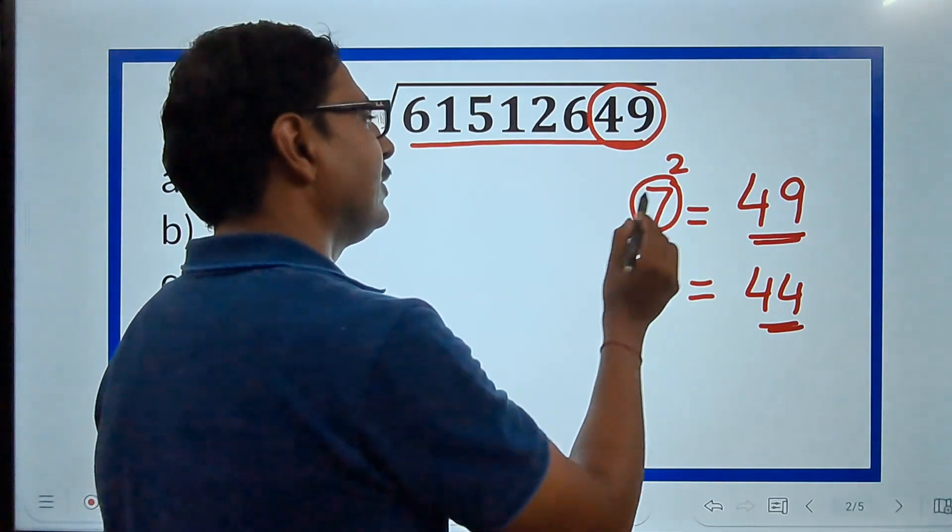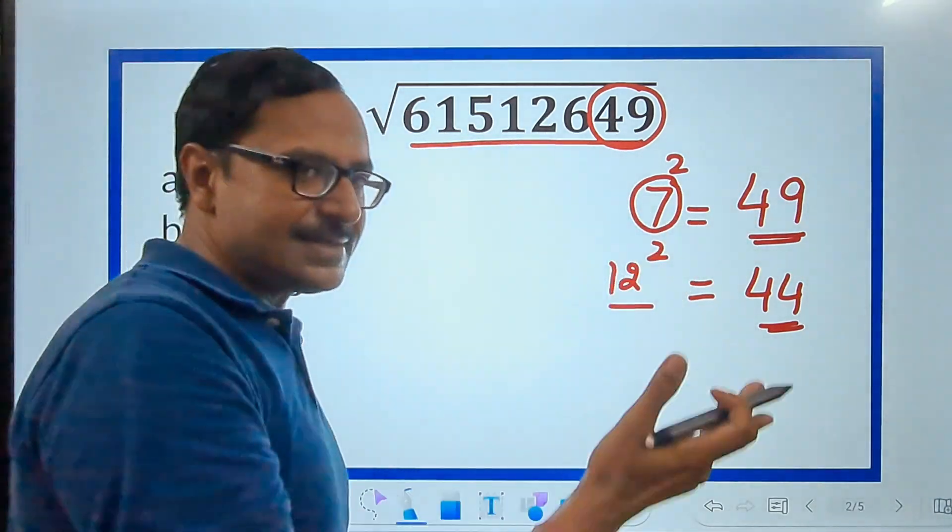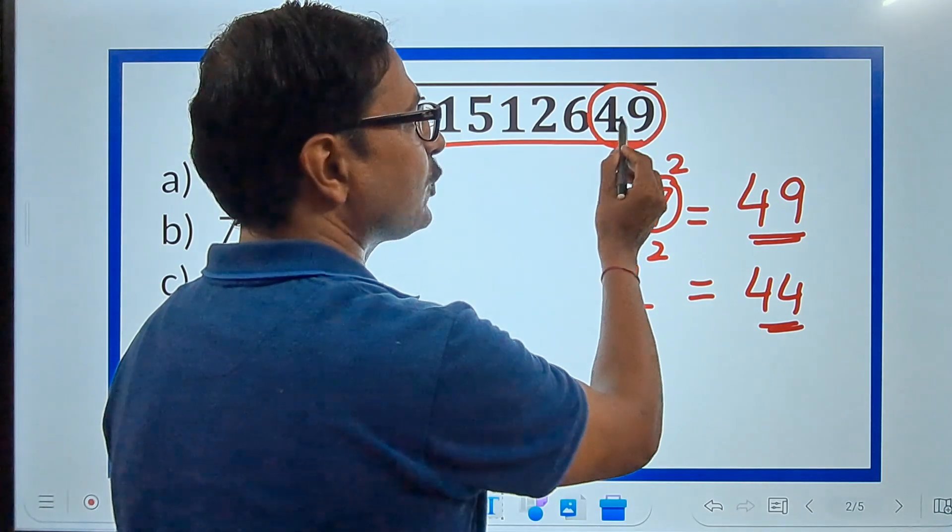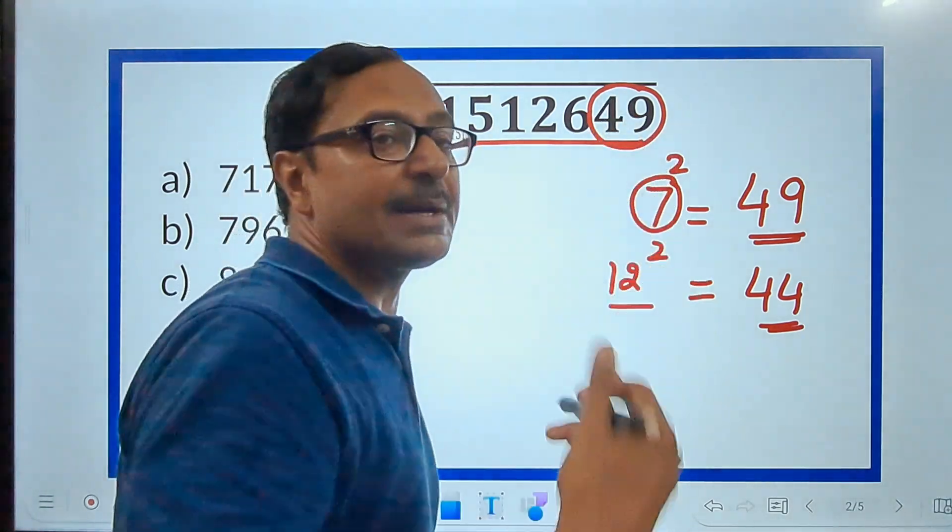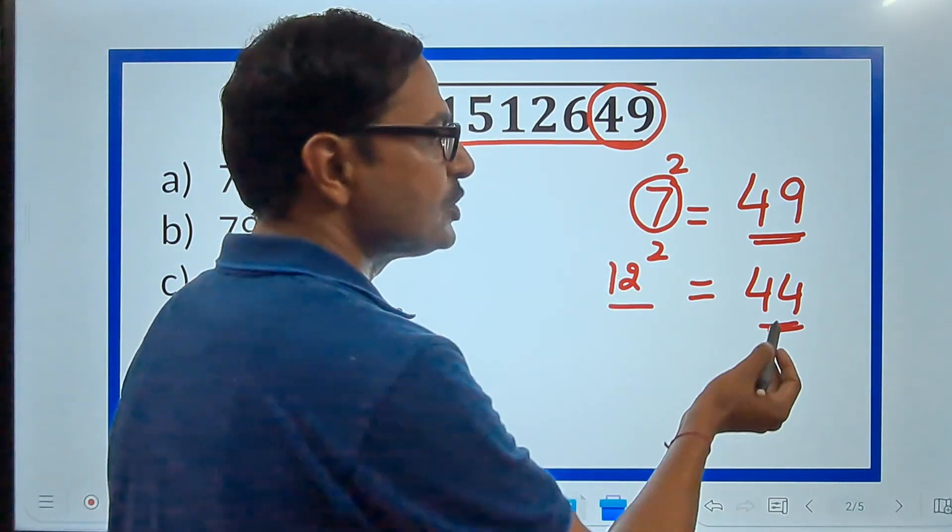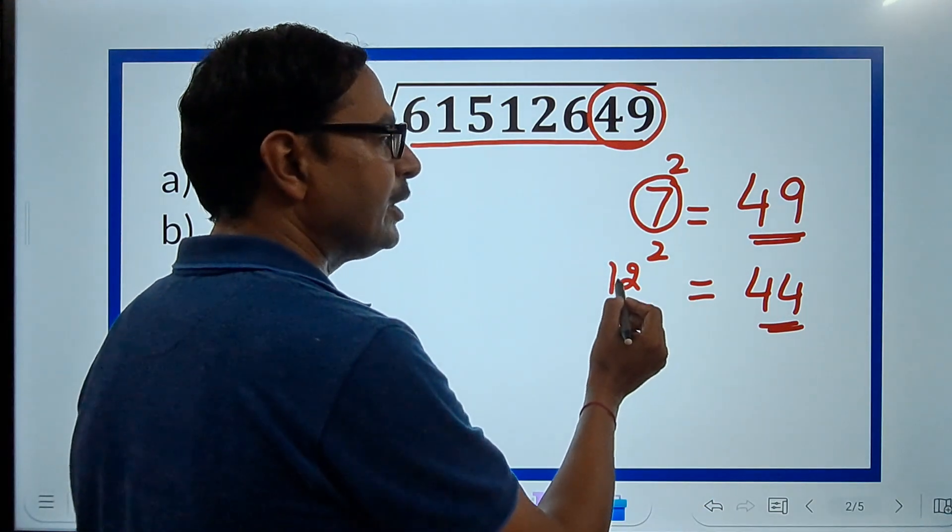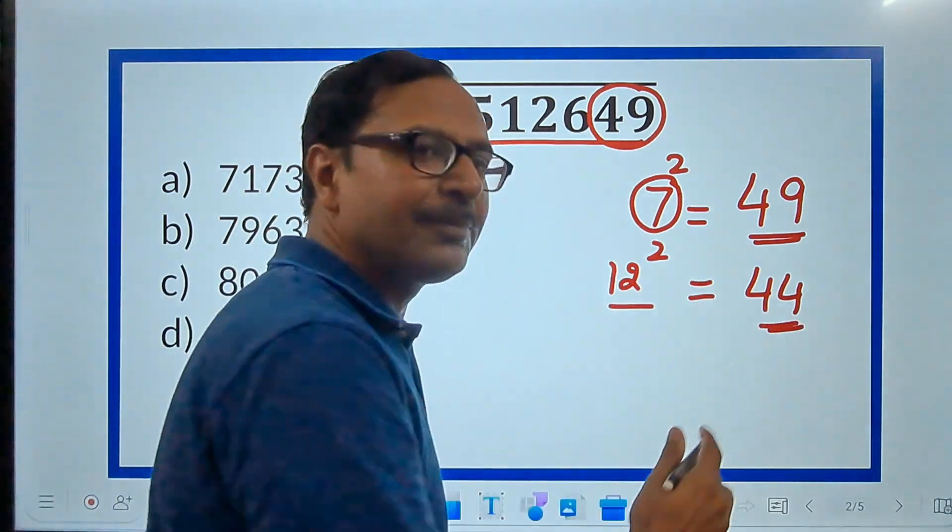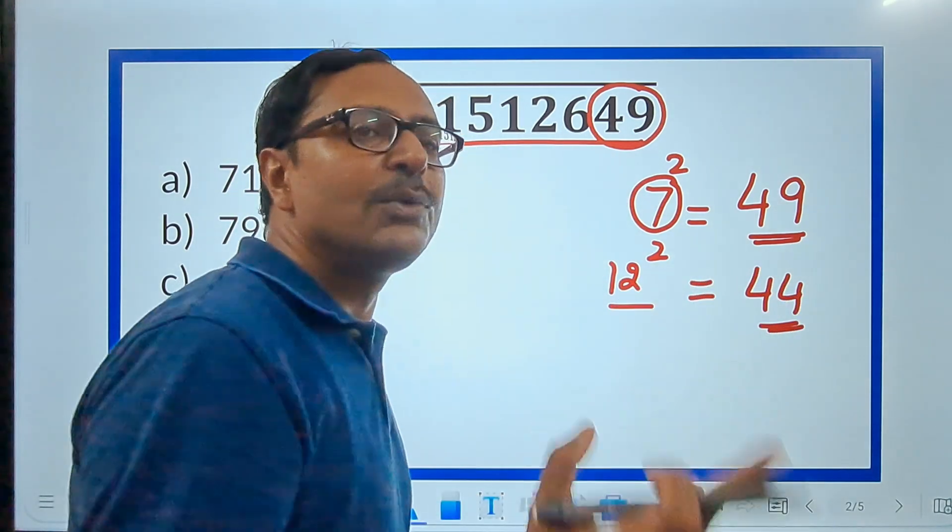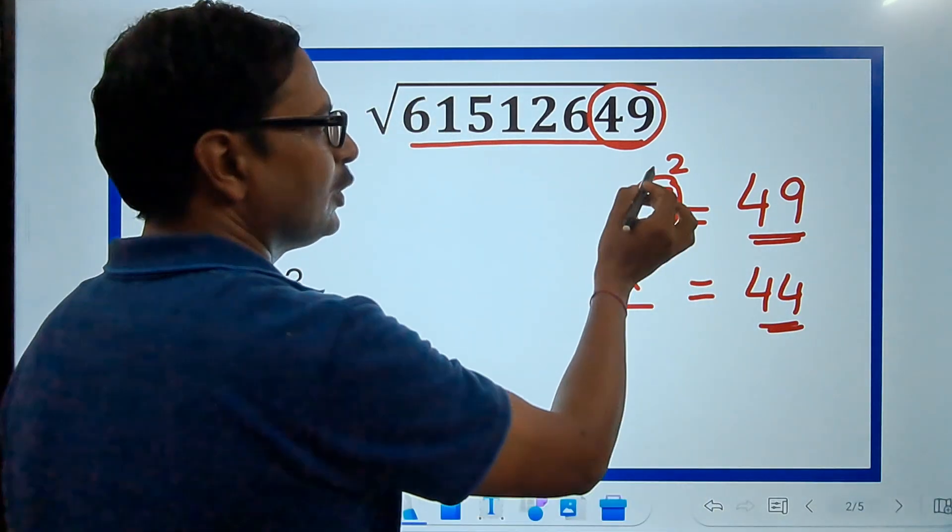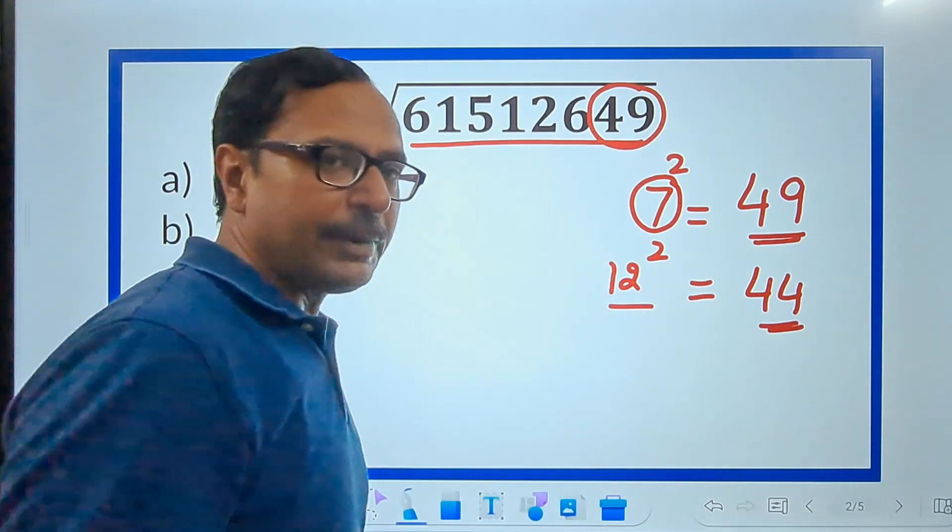So, I need this number whose square ends in these 2 digits, 49. So, here, in this case, it is 7. But in case 49, in place of 49, you have some number which is not a perfect square. So, you can look for a number whose square ends in this number, right? Just like 12 in case of 44.